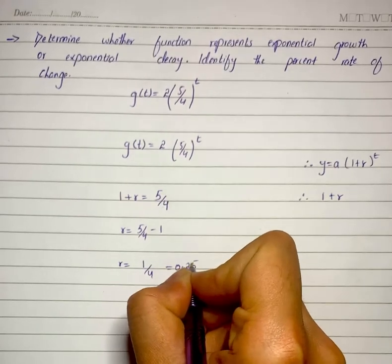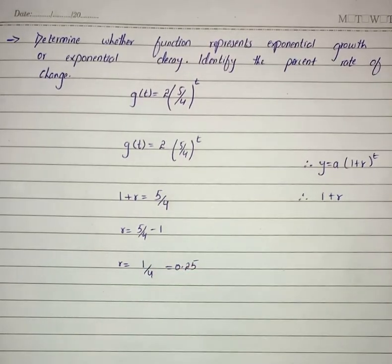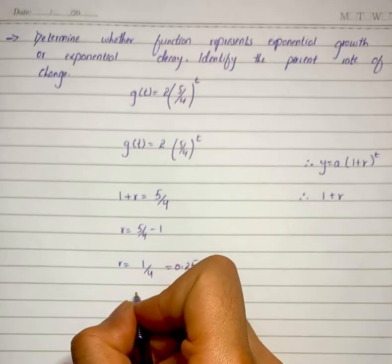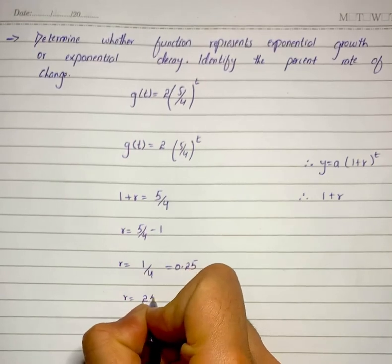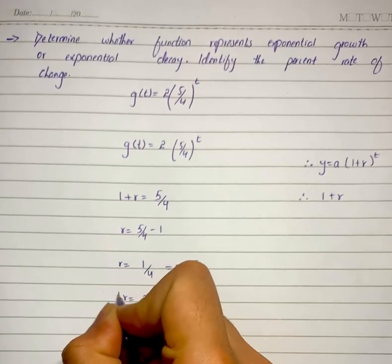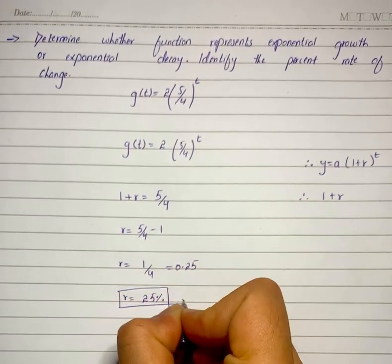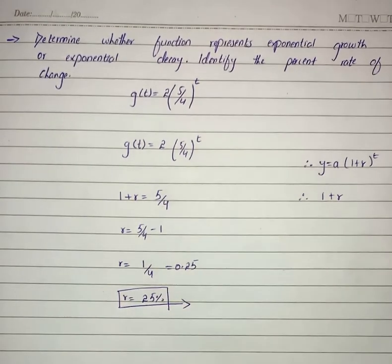So we need the value in percent, so we will multiply it by 100. So it will become r equals 25 percent. That is the exponential growth rate of the function that is given in the problem.